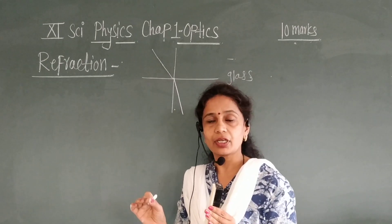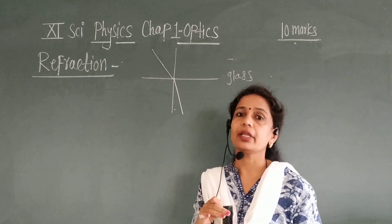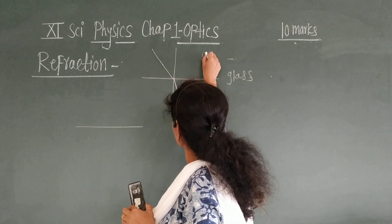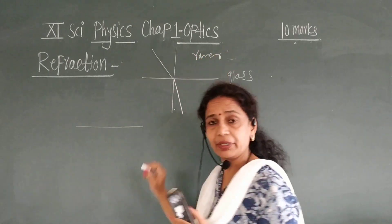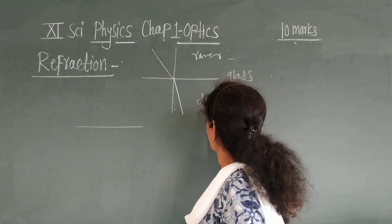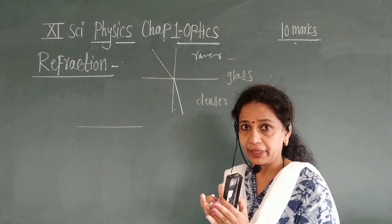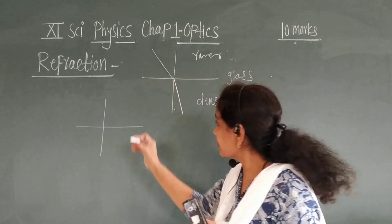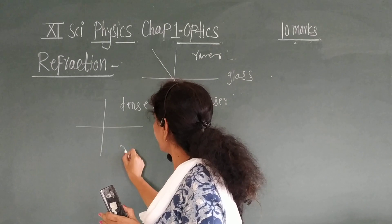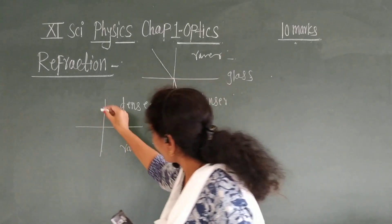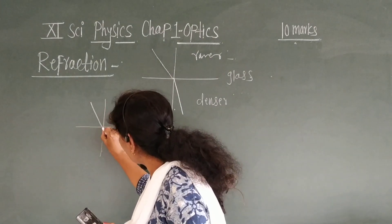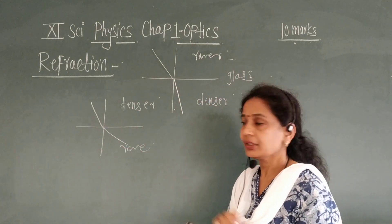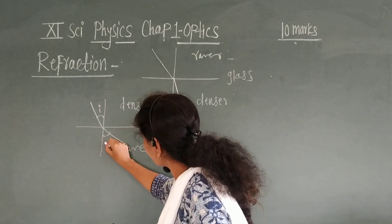Rare medium means the particles are more separated. Denser medium means particles are closely compacted. When light travels from a denser medium to a rare medium, it bends away from the normal. This is the angle of incidence and this is the angle of refraction.